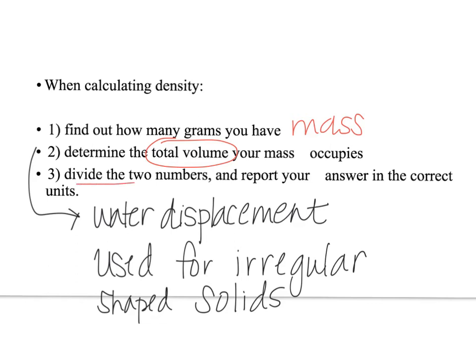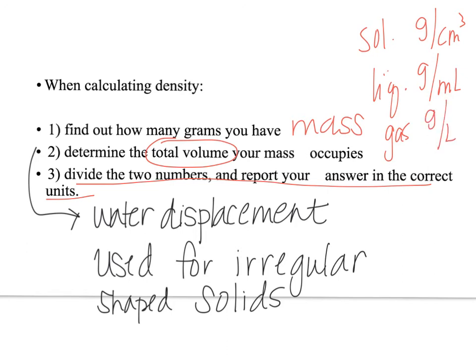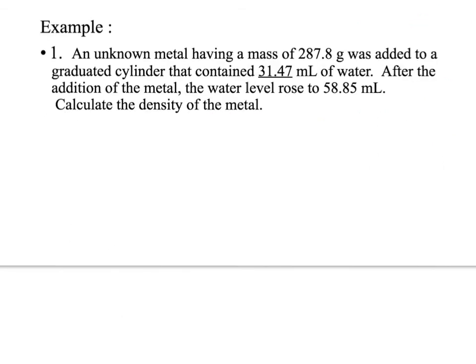And then of course the last step is to divide the two numbers and report your density, answer, and units. And remember for solids, we use grams per centimeter cubed. For liquids, we use grams per milliliter. And then for gases, we use grams per liter. Alright, so let's try this example problem. It says we have an unknown metal having a mass of 287 grams, so that's going to be our mass. And it was added to a graduated cylinder that contained 31.47 milliliters of water. After the addition of the metal, the water level rose to 58.85 milliliters. So it says calculate the density of the metal.